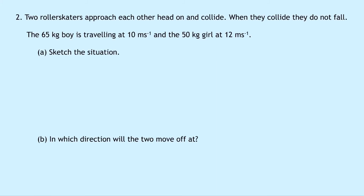Question two has a few parts. Two roller skaters approach each other head-on and collide; when they collide, they do not fall. The 65-kilogram boy is traveling at 10 meters per second and the 50-kilogram girl at 12 meters per second. Part a says to sketch the situation — I'll use rectangles to represent the skaters.